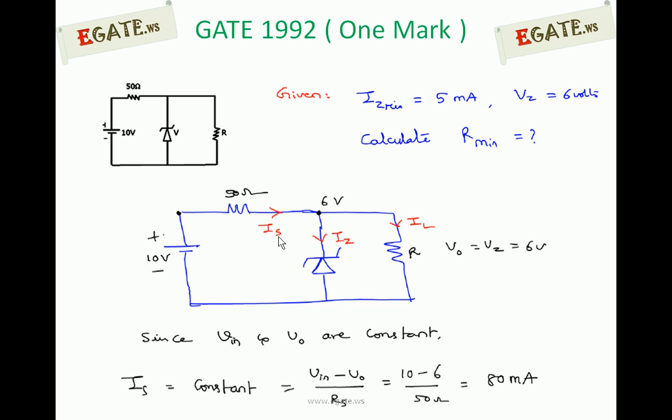Since V input and V0 are constant, current flowing through 50Ω is constant. The value can be calculated using (V input minus V0) by RS: (10 minus 6) by 50Ω, which is 80mA. So 80mA constant current is flowing.